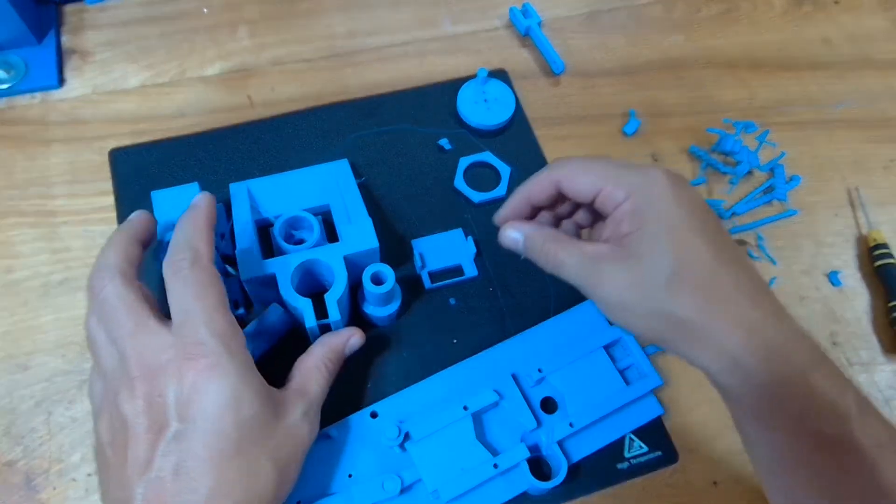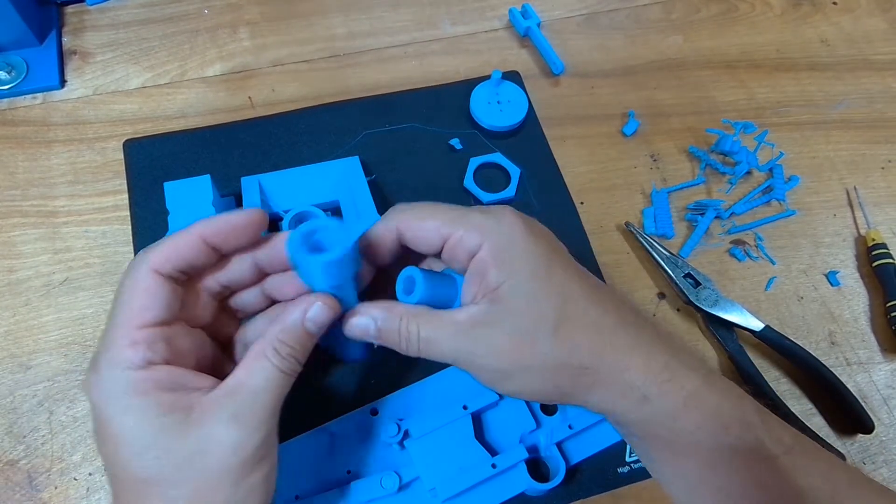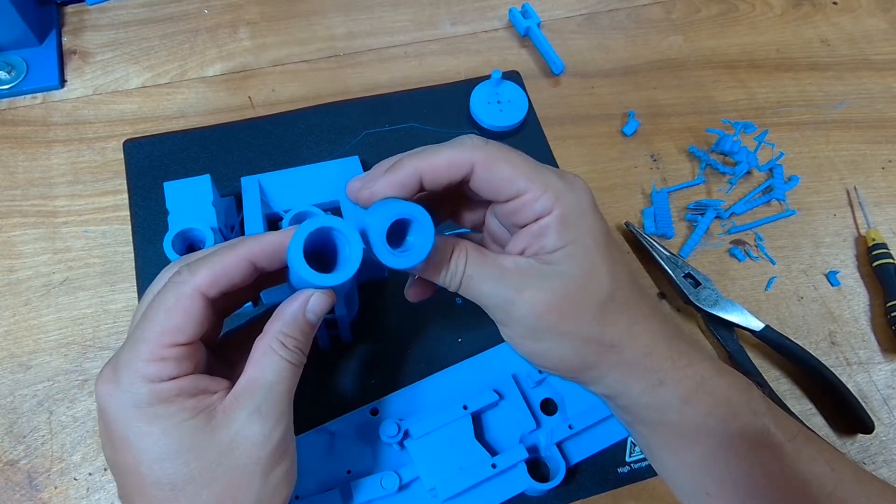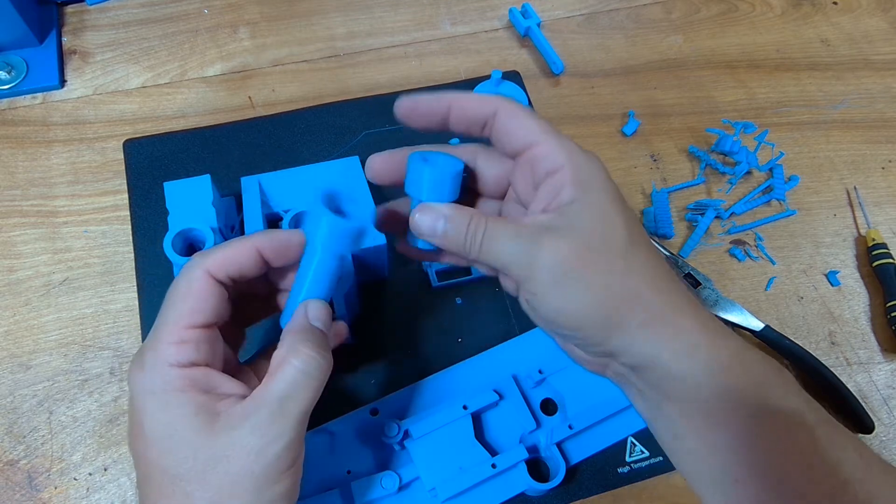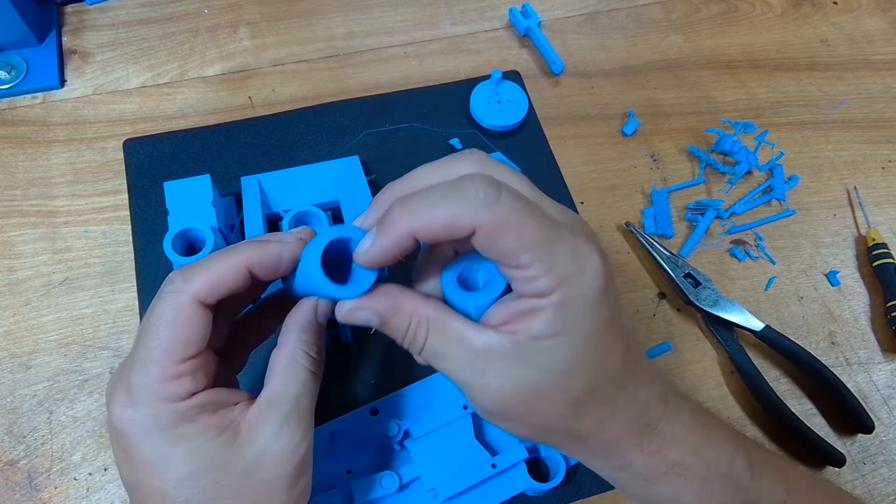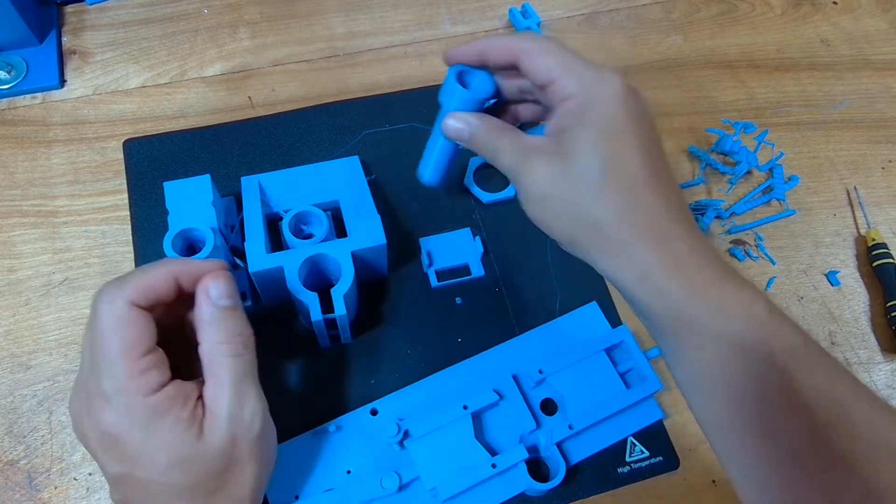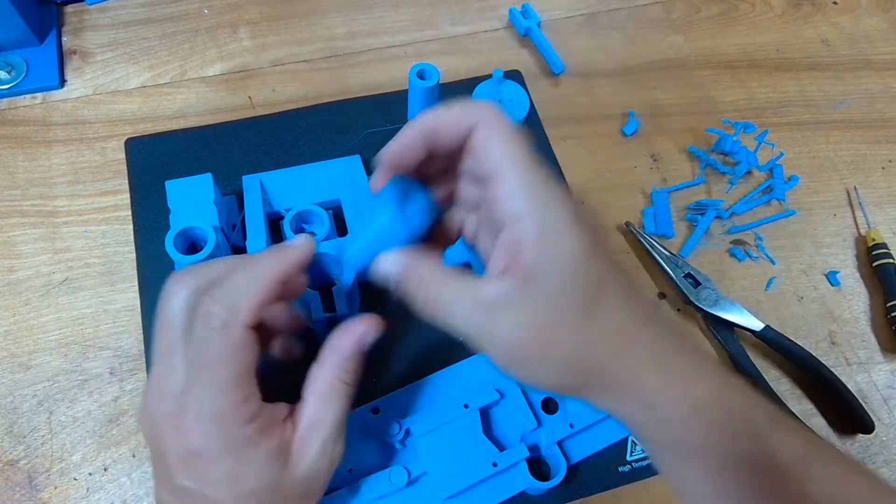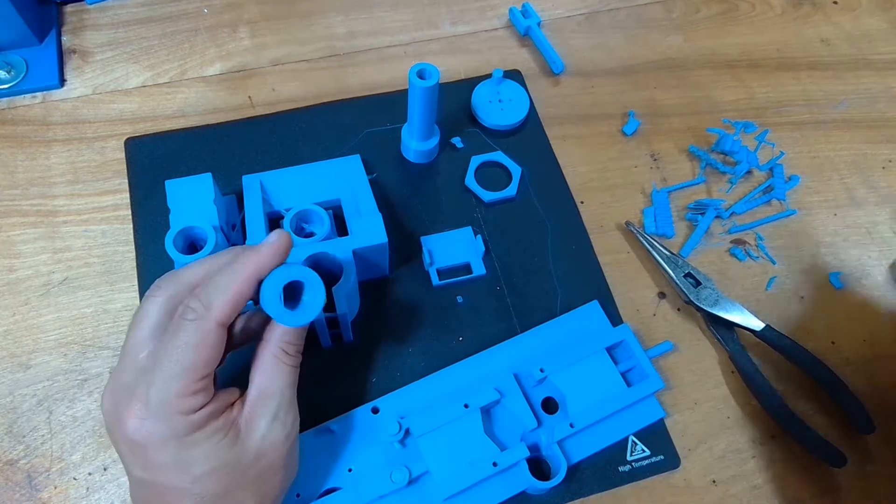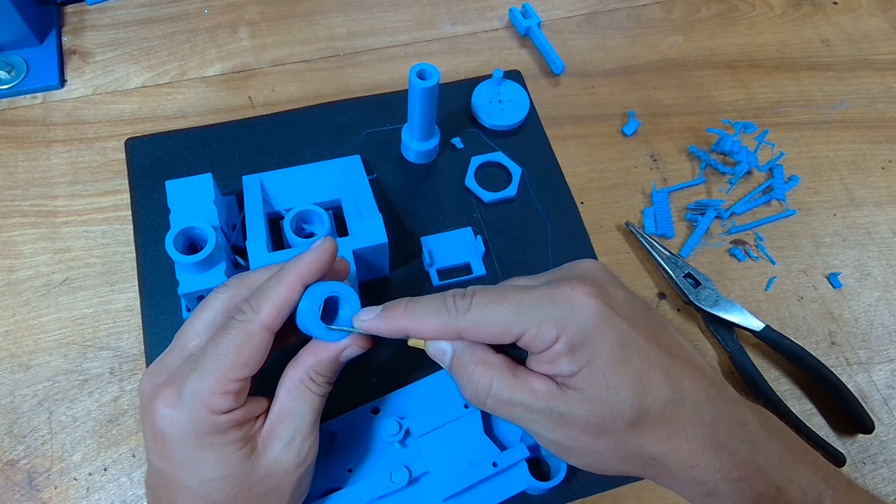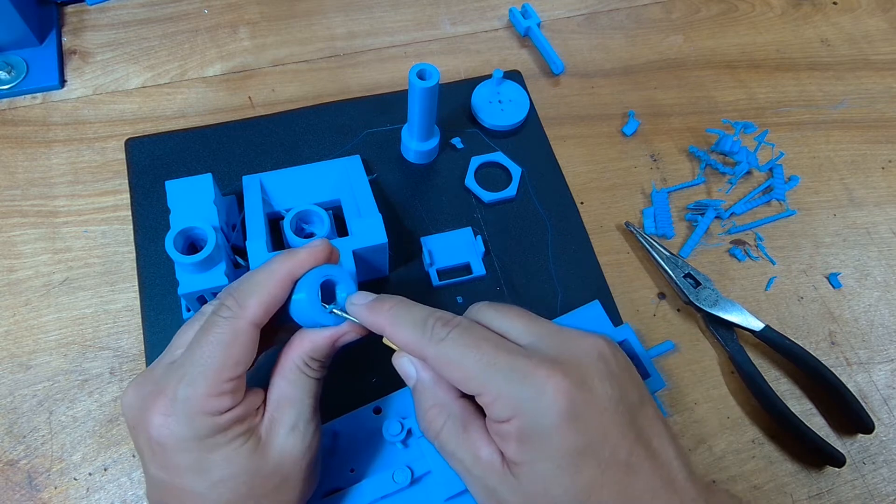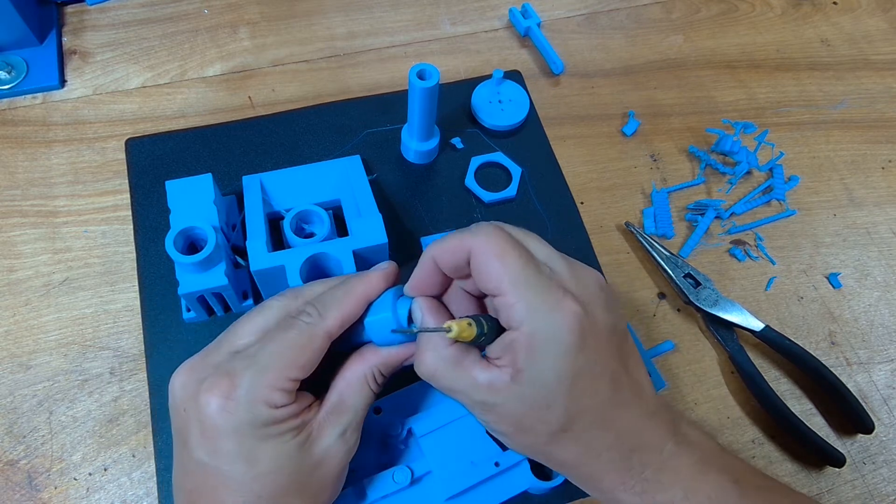All right, so what else is here? We have the two nozzles—I have one for nine millimeter and one for two to three. There's not much to do here, actually nothing on this one so we can set that aside. This one does have a support line inside of it. Pop that out.